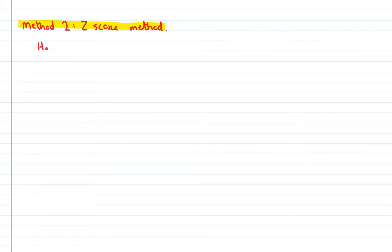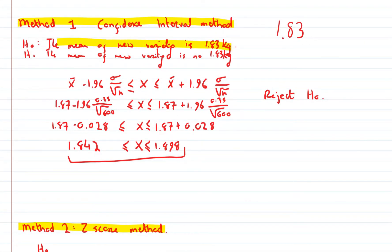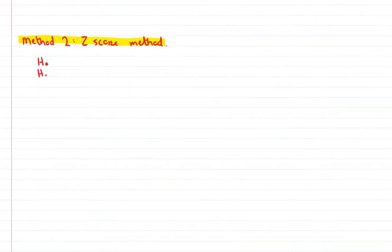Same again though. Put in our H0 and H1, and they're the same as they are up there. The mean of the new variety. So I'm not going to write it again, but here is our H0 and H1.